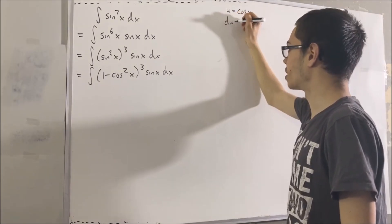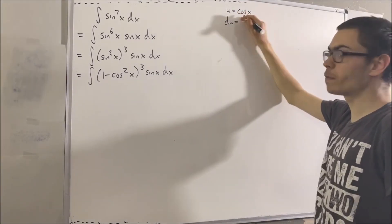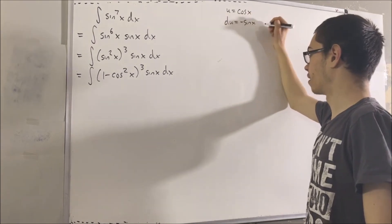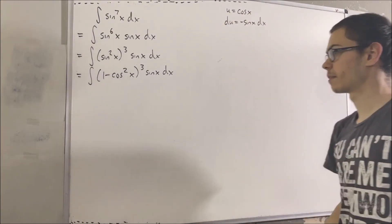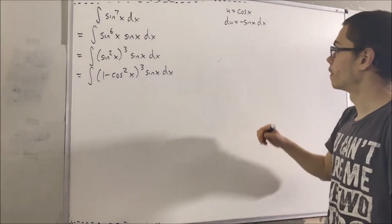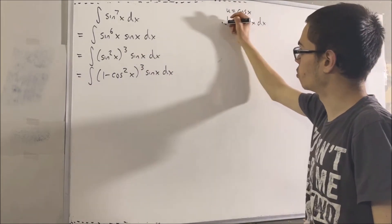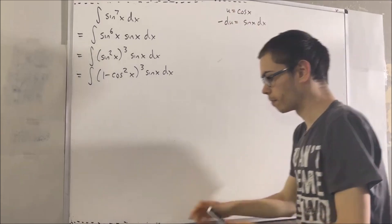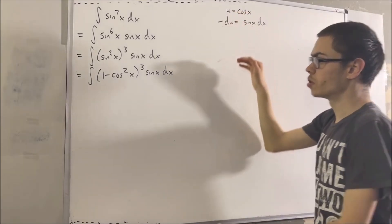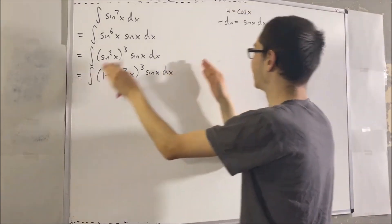And as a result, du is the derivative of cosine, which is negative sine, and of course we're going to need a dx. If we divide negative 1 on both sides, that'll move the minus sine to the other side. And so this is what we're going to use to convert our integral completely in terms of u.